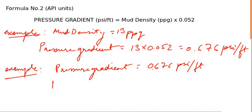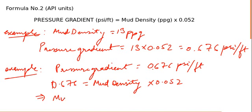Pressure gradient 0.676 equals mud density to be calculated times the constant factor 0.052. So mud density equals 0.676 divided by 0.052.